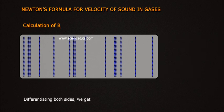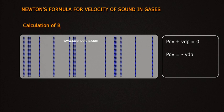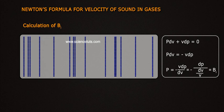Differentiating both sides, we get p dv plus v dp equals zero, so p dv equals minus v dp. Therefore, p equals minus v dp by dv, which equals minus dp divided by dv over v, and this equals b_i.